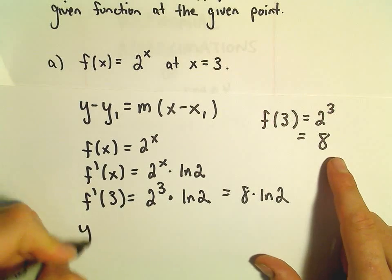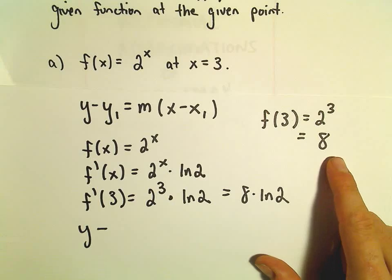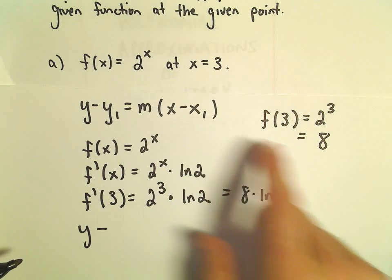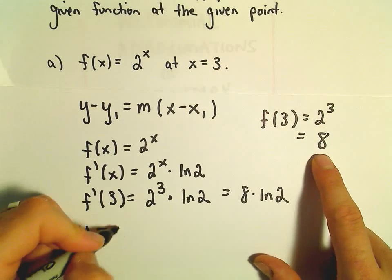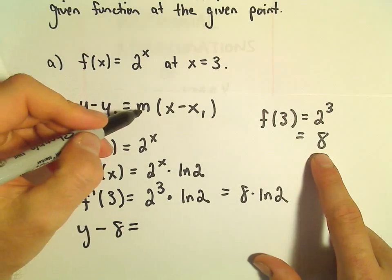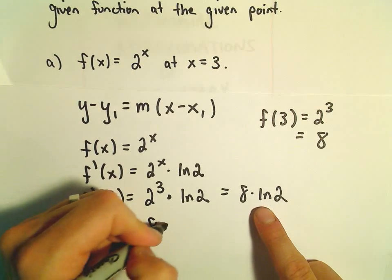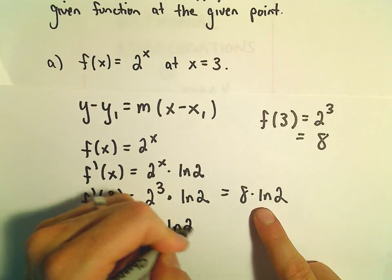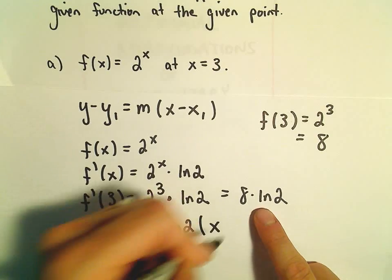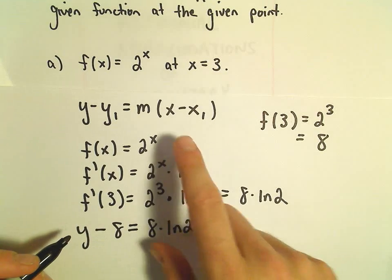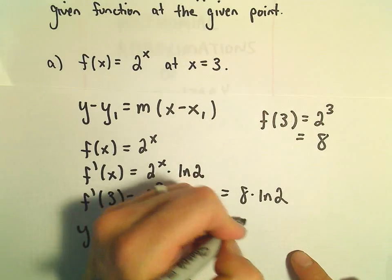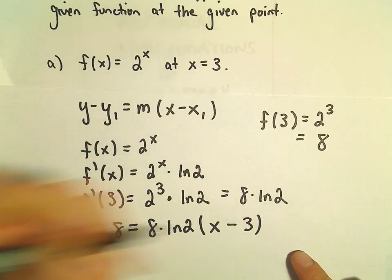Using point-slope form, we have y minus our y-coordinate. If we plug in 3, the y-value we get is 8. The slope of the tangent line is 8 times the natural logarithm of 2. Then we take x minus the x-coordinate, which was given to us as 3.